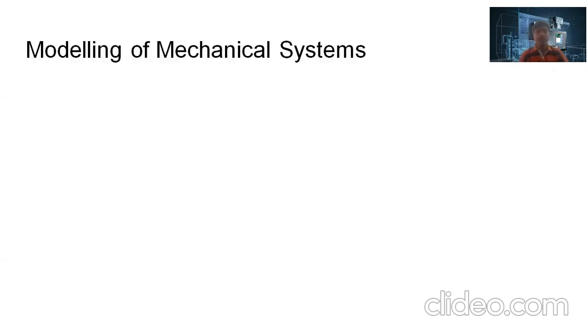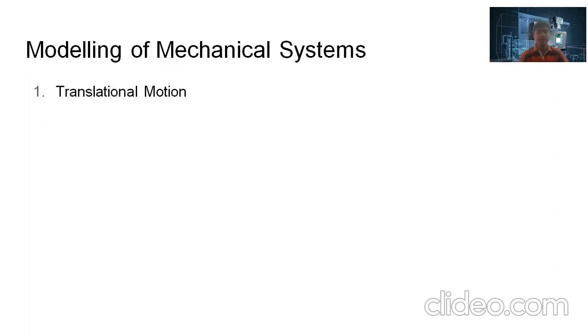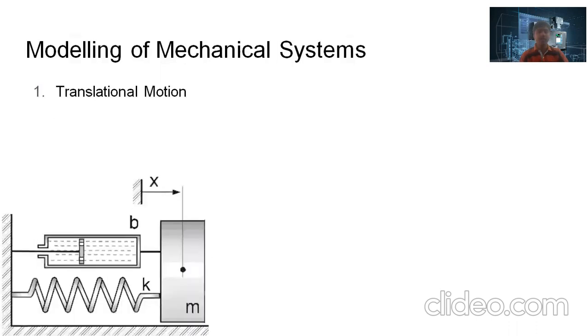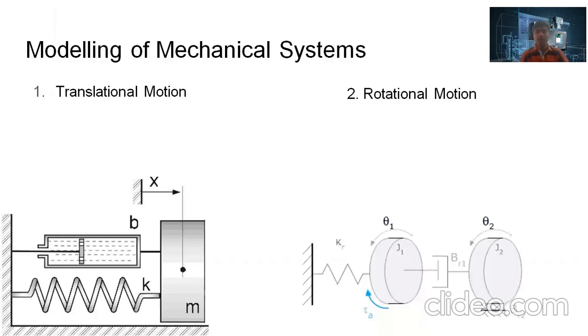Based on the motion of the body, mechanical systems are classified into translational and rotational systems. In translational systems, the motion of the body is along a straight line, whereas in rotational mechanical systems, the motion of the body is on its own axis. First, we will see the mathematical modeling of translational mechanical systems.